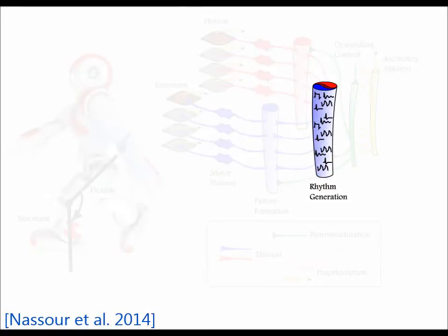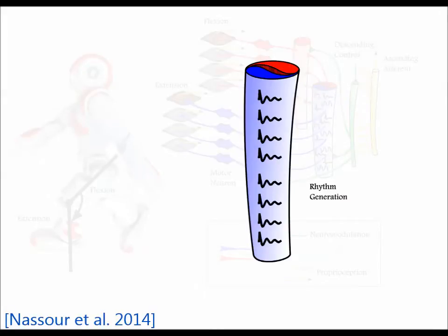In the rhythm generation layer, different types of patterns can be generated according to the descending control: oscillation patterns, almost oscillation patterns, plateau patterns, and quiescent patterns. Different patterns can also appear on different joints at the same time.